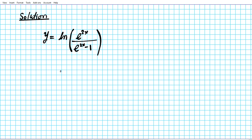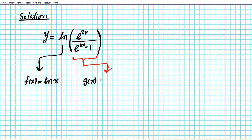We're going to decompose the function and then apply the chain rule. The outer function is the natural logarithmic function, so we call that f. So f of x, the outer function, is the natural logarithm of x. The inner function, e to the 2x divided by e to the 2x minus 1, we'll call that g of x. So g of x equals e to the 2x divided by e to the 2x minus 1.